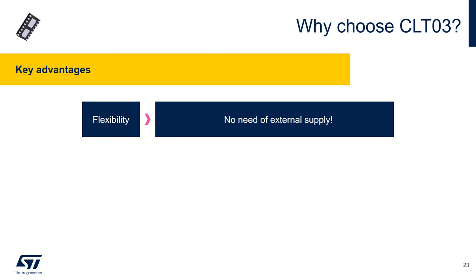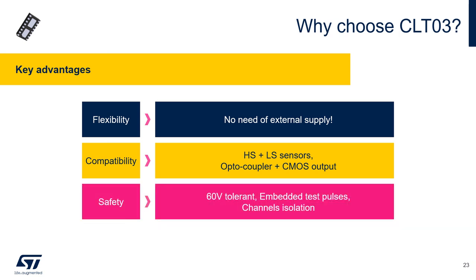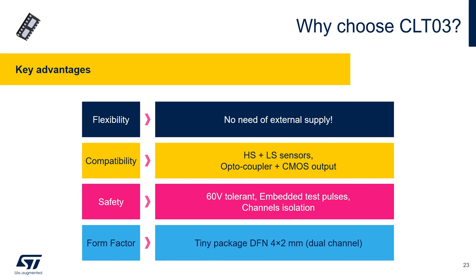Let's summarize the key advantages brought by the new CLT-03 IC. It enhances flexibility as it doesn't require any external supply. It widens compatibility on the process side supporting high side as well as low side sensors, but also on the output interface enabling to drive optocoupler or CMOS logic. It ensures high safety and reliability thanks to the 60 volt tolerance, embedded test pulse generator, and complete separation of channels. Last but not least, it reduces space on the PCB as it comes in a really tiny DFN package.